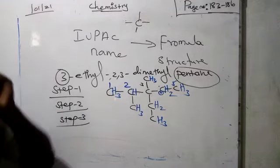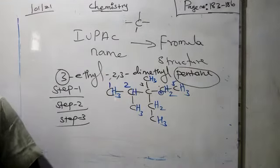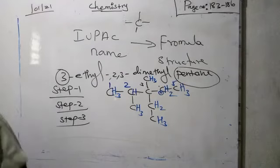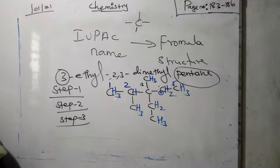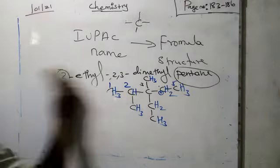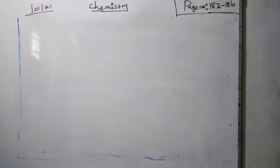In the same way, you must practice with other compounds. Another exercise compound is given: 4,5-diethyl-3,4,5-trimethyl-octane. Practice yourself and you will get the correct structural formula. Remember: the valency of carbon is 4.